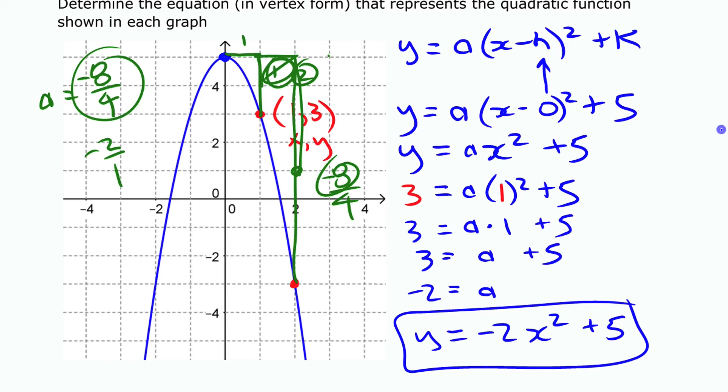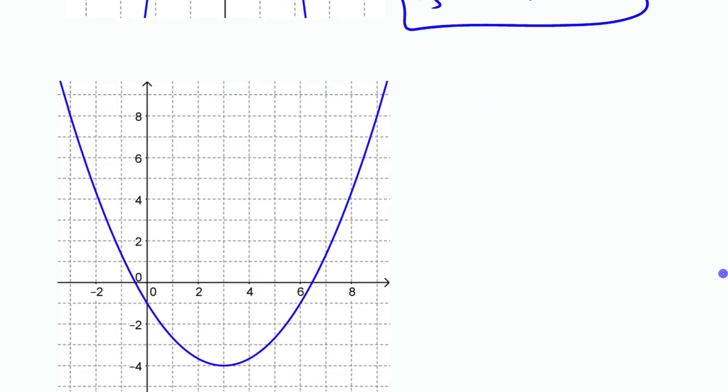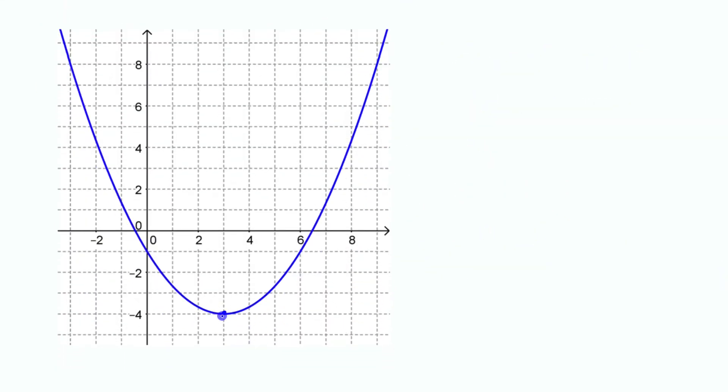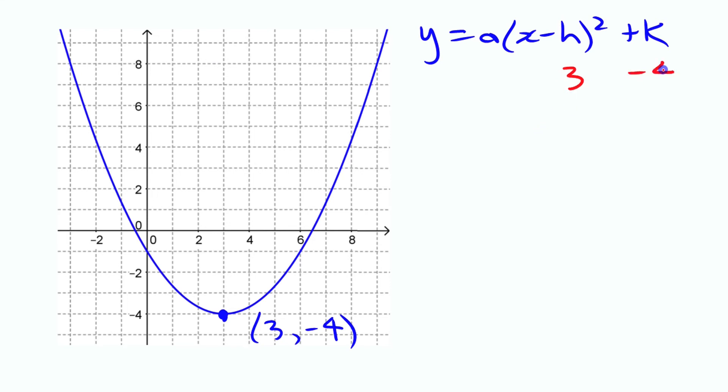Let's do a second one here. If we're going to do this one, we're going to use the coordinates of the vertex there to start with: 3, negative 4. If we start with our vertex form and we substitute in what we know, we know we have a 3 there and we have a minus 4 over here.